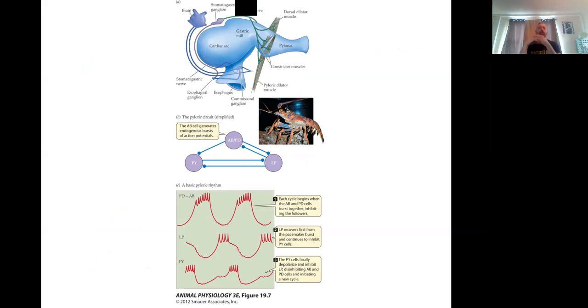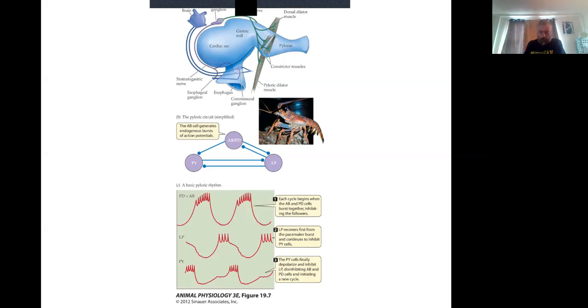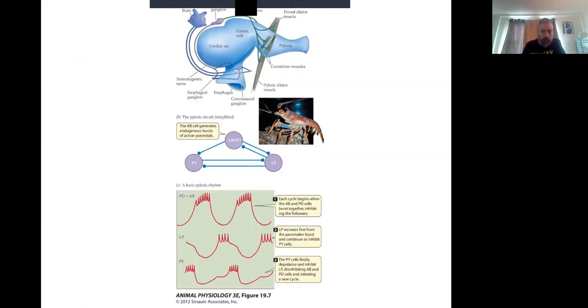So an example of one of those things might be looking at what we call the pyloric circuit of a lobster. Now, a lobster has a fairly complicated digestive system, by our standards anyway. It requires a fairly robust pattern of movement, of grinding, of shuffling of food products around. And so the way that each of these three parts, the pyloric part, the gastric meal, and the cardiac sac, all kind of pass things back and forth, and back and forth, and back and forth, has to do with one of these closed loop models.